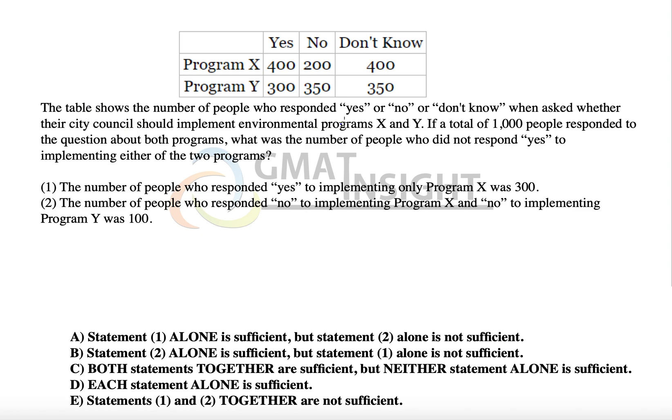The table here shows the number of people who responded yes or no or don't know when asked whether the city council should implement environmental programs X or Y. This means 400 people said yes for program X, 200 people said no for program X, and 400 said don't know.